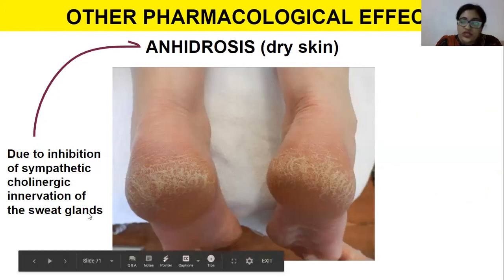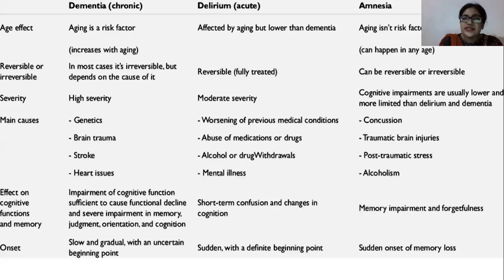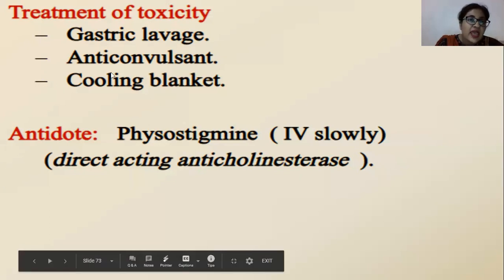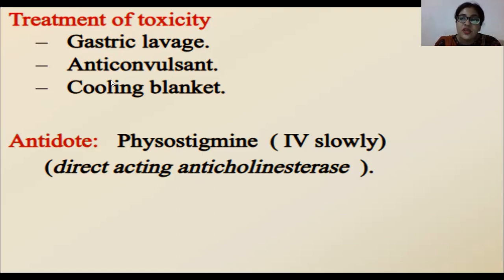Anhidrosis — dry skin — results from inhibition of sympathetic cholinergic innervation of the sweat glands. For treatment of anti-muscarinic toxicity, you first empty the stomach if the drug was ingested, and then use anticonvulsants or treat the symptoms symptomatically rather than giving medicines. The antidote is physostigmine, which was discussed previously.